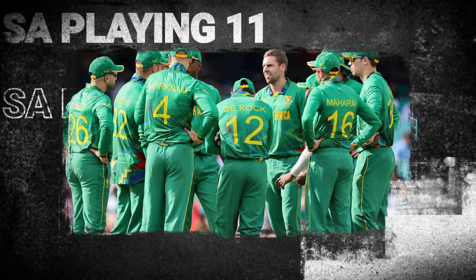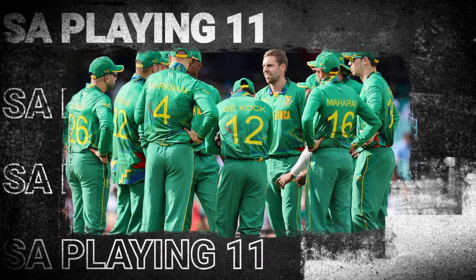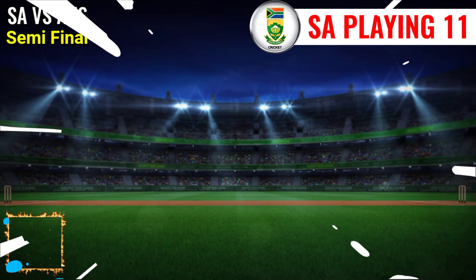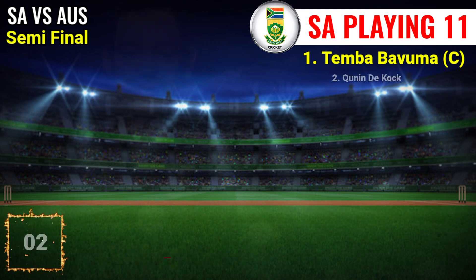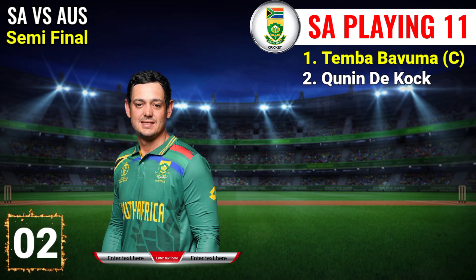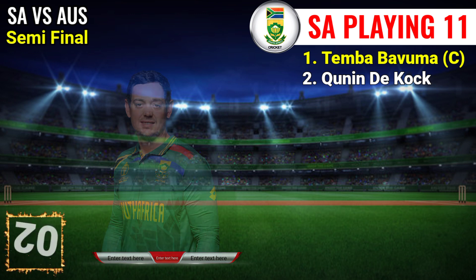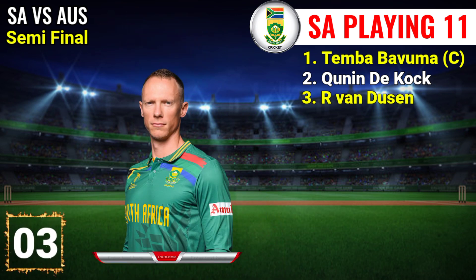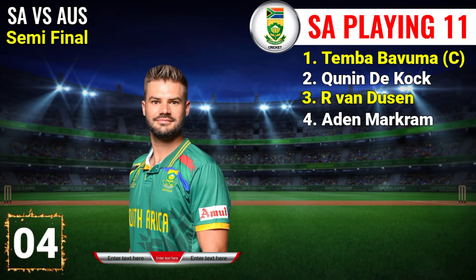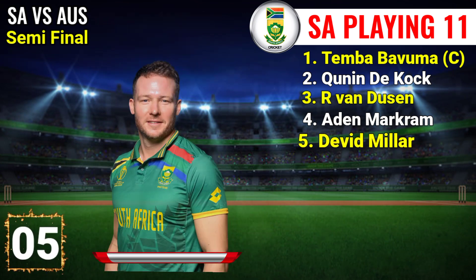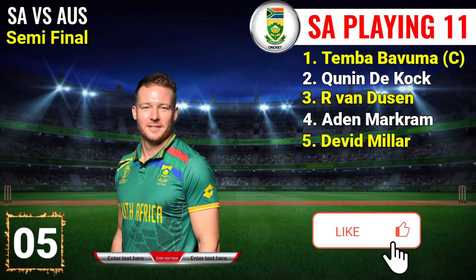Team South Africa Final Playing 11. Number 1: Temba Bavuma, right-hand batsman and captain. Number 2: Quinton de Kock, left-hand batsman. Number 3: Rassie van der Dussen, right-hand batsman. Number 4: Aidan Markram, right-hand batsman. Number 5: David Miller, left-hand batsman.